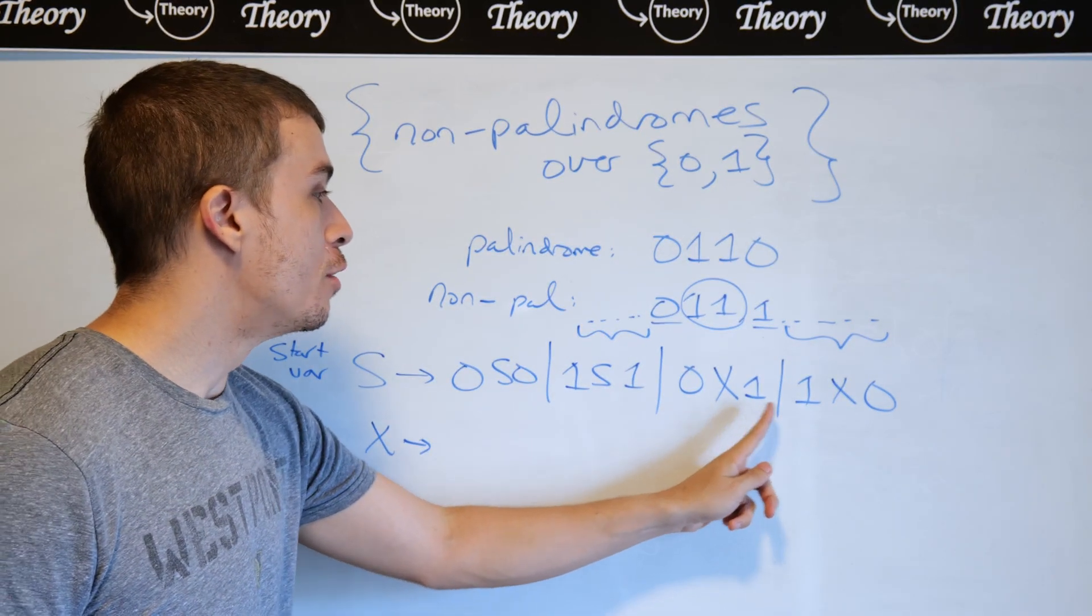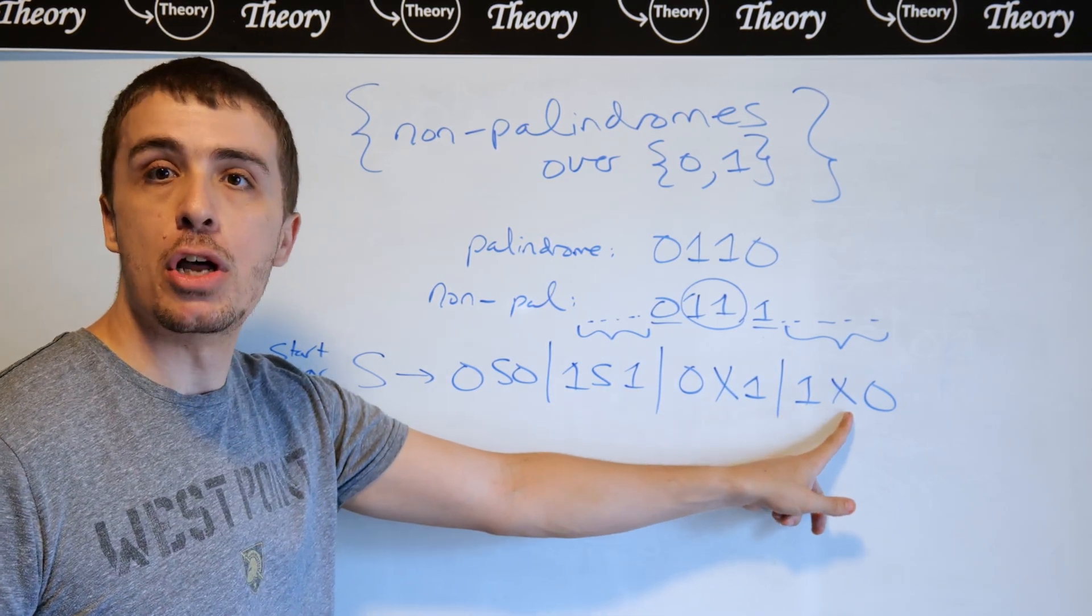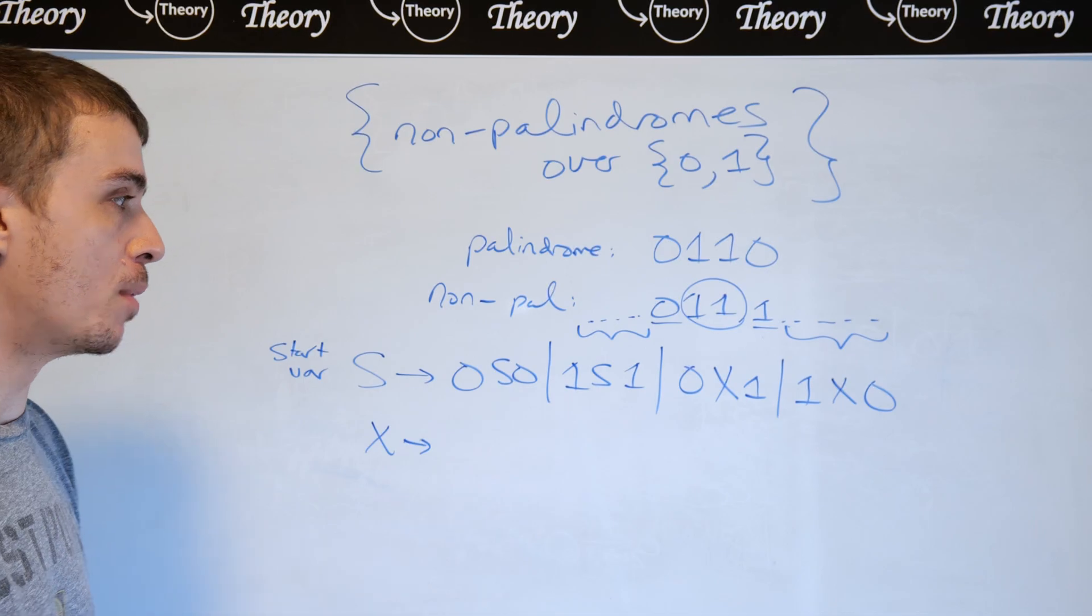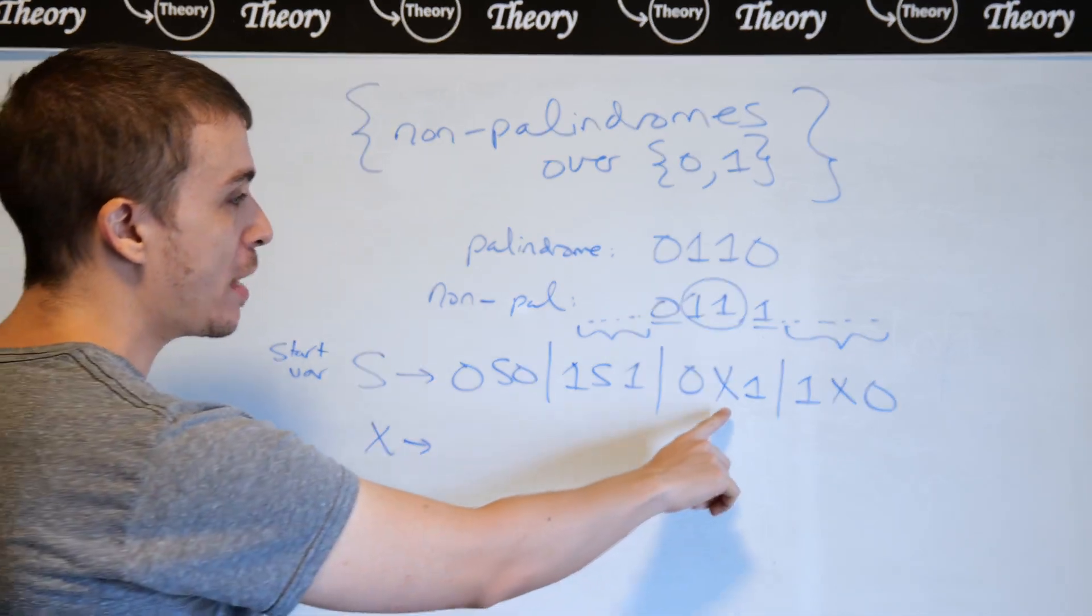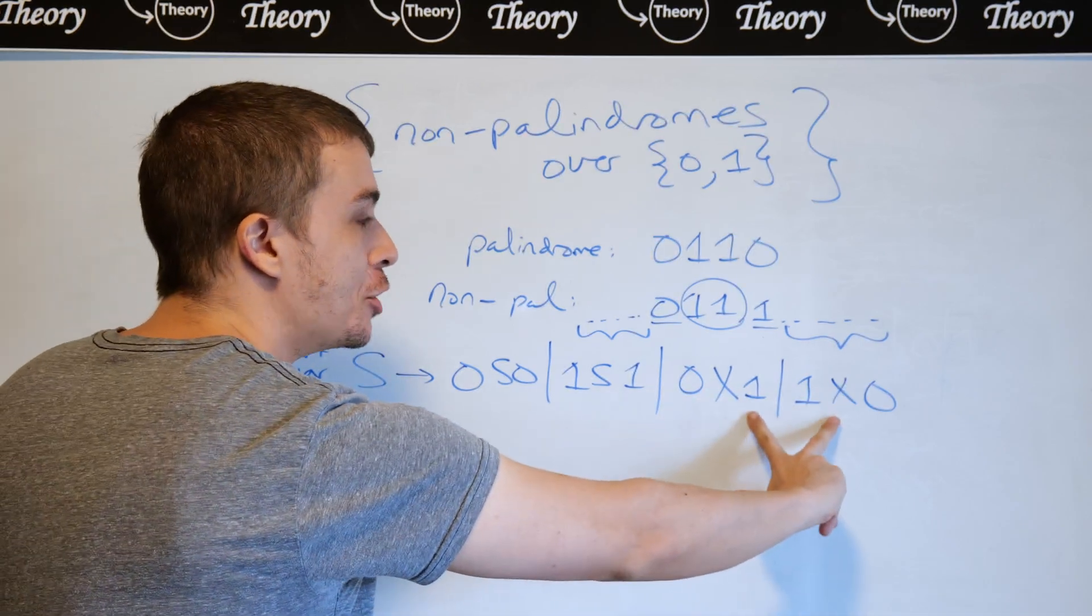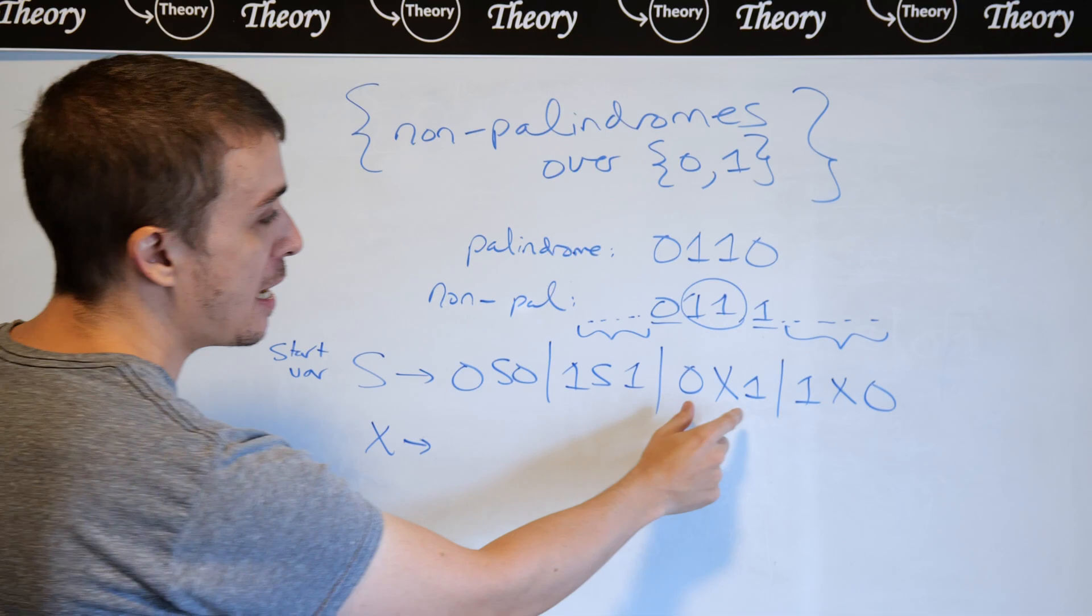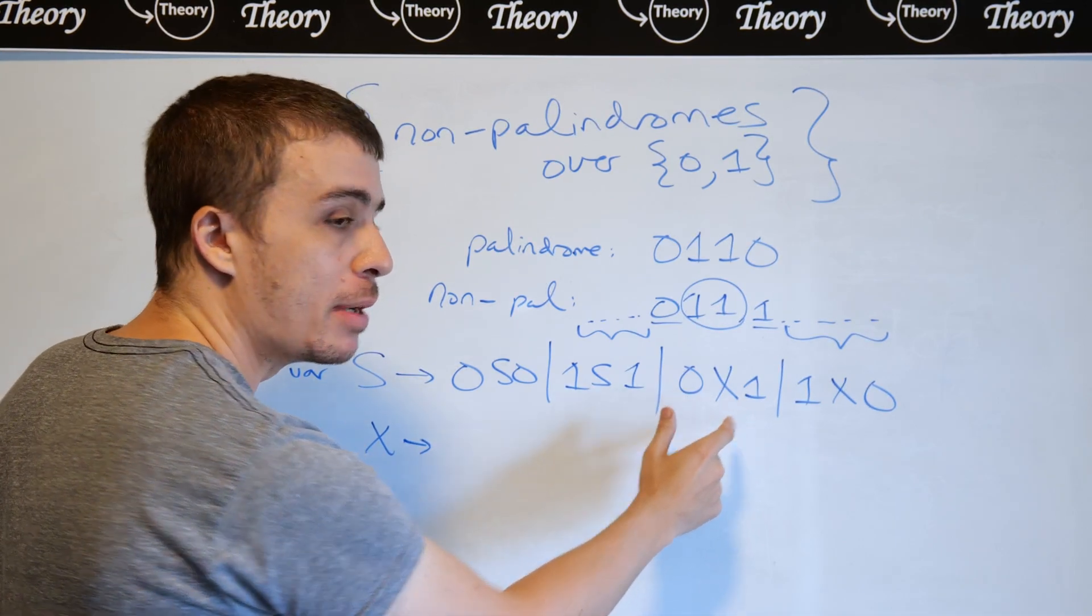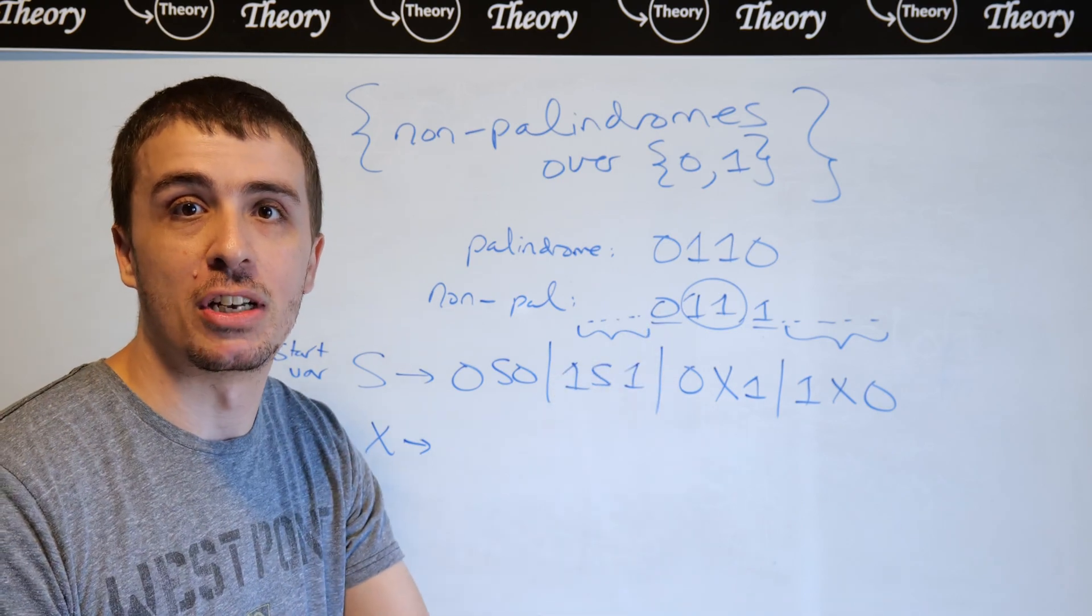And notice that there's no right-hand side corresponding to s with no variables on it. Every single one of these has a variable. So therefore, if we want to actually make a string of terminals, we have to go through one of these two rules right here, which involve x. And so therefore, if we did that, then we must have generated different characters at the same distance from either end, which corresponds to non-palindromes.